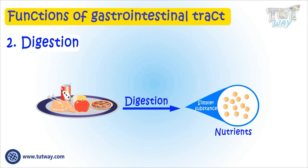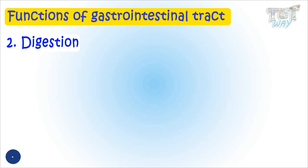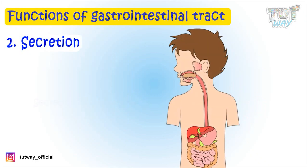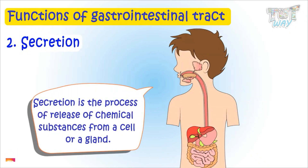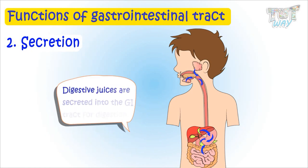The next important function of our digestive system is secretion. Secretion is the process of releasing chemical substances from a cell or gland. In our digestive system, many digestive juices are secreted into the GI tract that help in digestion — breaking down food particles into nutrients.